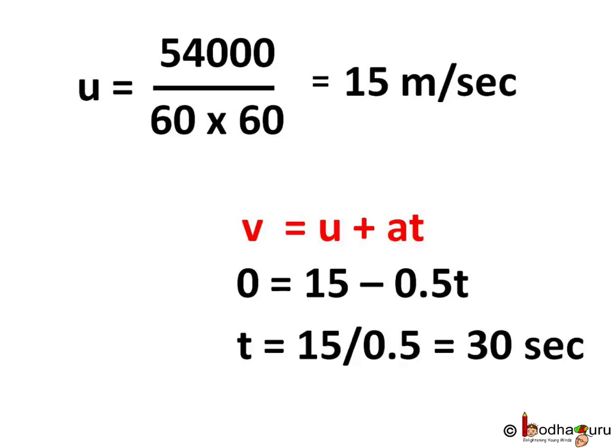So we use v is equal to u plus at. By replacing the values we get 0 is equal to 15 minus 0.5 into t. Remember acceleration is minus 0.5 meter per second square because it is a case of de-acceleration. So t is equal to 15 by 0.5 which is equal to 30 seconds. So it will take 30 seconds before the train stops.